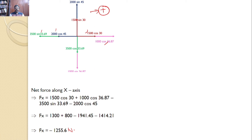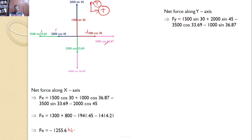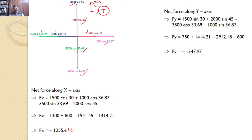Similarly, the net force along the y-axis, taking upward as positive: Fy = 1500 sin 30 + 2000 sin 45 − 3500 cos 33.69 − 1000 sin 36.87. Simplifying, Fy = −1347.97 N. Since Fx is negative, the net force along x is towards the left. Since Fy is negative, the net force along y is downward.